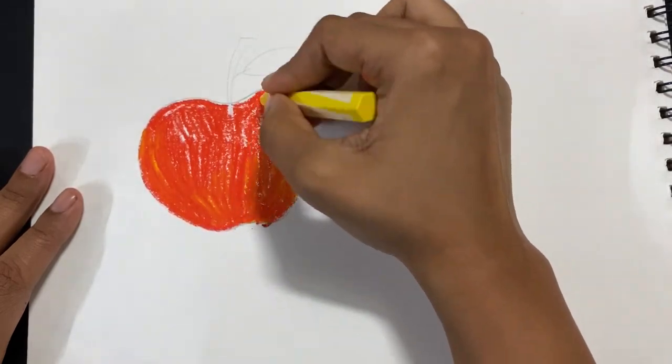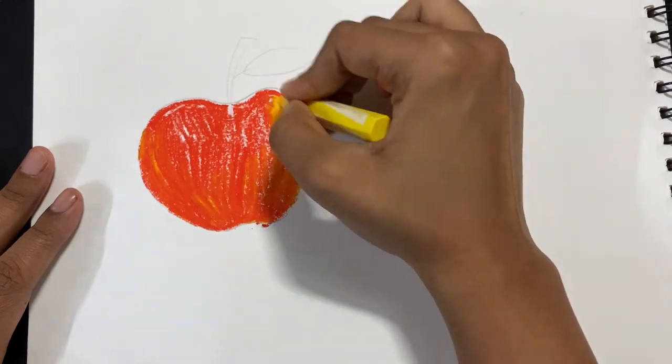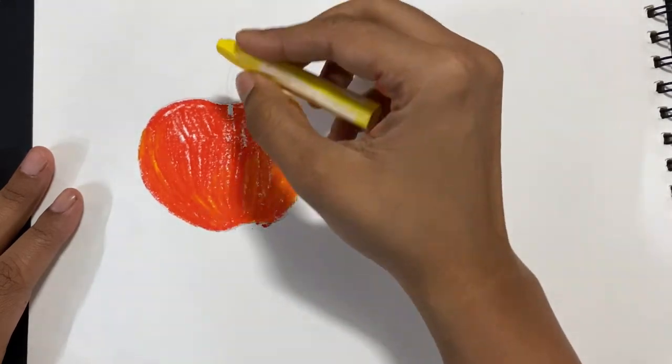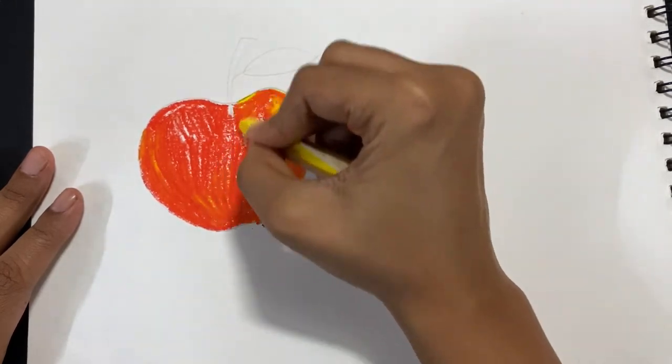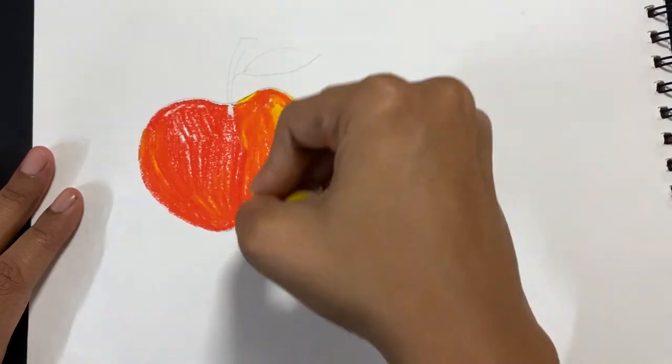You'll notice that all the white areas, wherever there are gaps, I'm going to add the color over there so it gives a really smoother finish. There are different kinds of oil pastels available in the market.